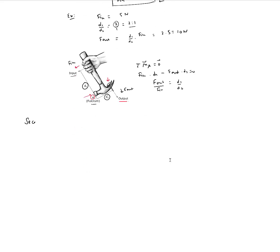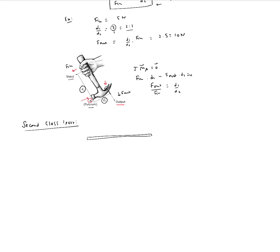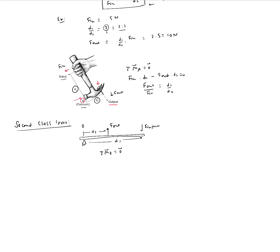Second class levers are defined by the fact that the output, load, or resistance is between the fulcrum and the input. With the fulcrum at one end, output at some intermediate point, and input force at the far end, writing sigma-MO equals zero gives: F-in times D1 plus F-out times D2 equals zero, and again F-out over F-in equals D1 over D2.